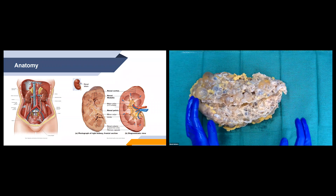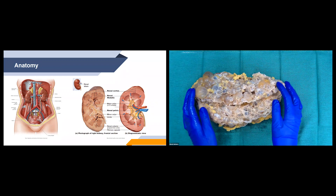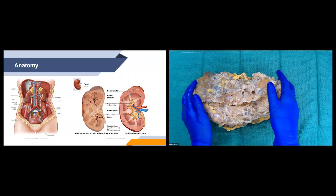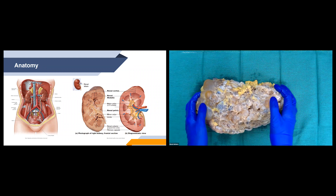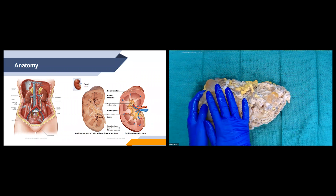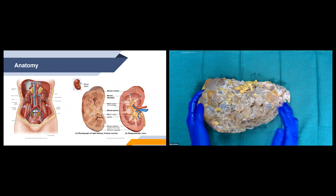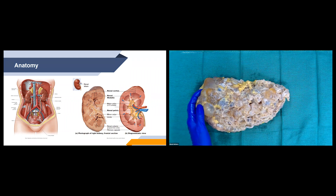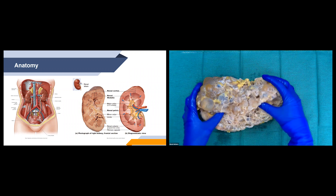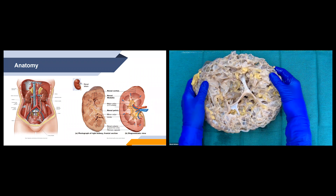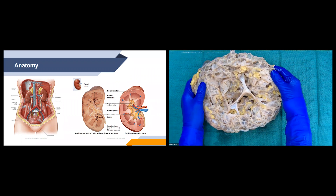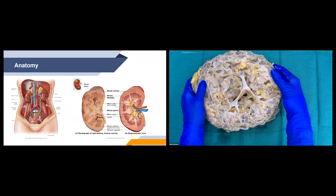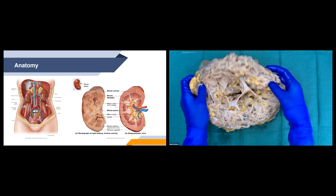Talking about the parenchyma of the kidney — going outside in, it starts with the capsule, which is the outermost aspect, then the renal cortex, and then the renal medulla, which is the innermost layer. We don't really see that clearly on our kidney here because there's some sort of pathology occurring.